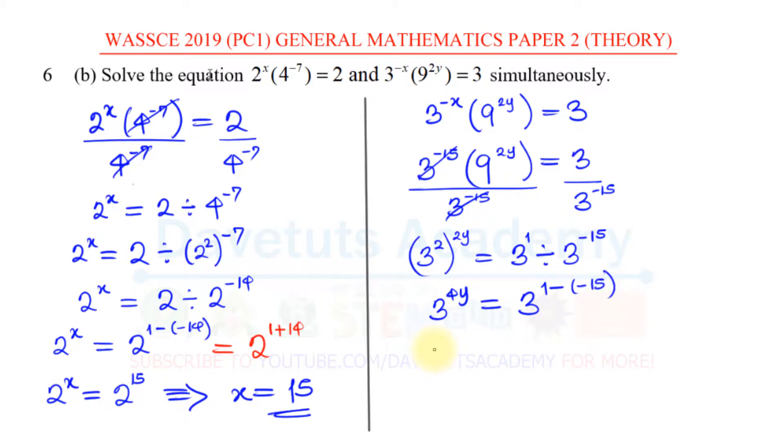So that is going to give me 3^(4y) = 3^(1+15). And 1 plus 15 is nothing but 16. And since the bases are equal, I can say this implies that 4y = 16. To solve for y, I can divide both sides by 4. So y = 4. So the solution to the equation that we are given to solve simultaneously is that x is 15 and y is 4.